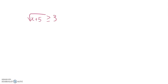We want to figure out when the square root of x plus 5 is greater than or equal to 3. First thing I'll do is square both sides. Subtract 5 from each side. 4 is the answer.